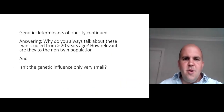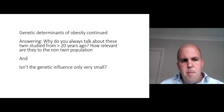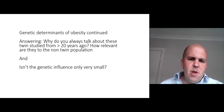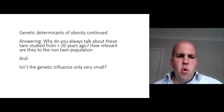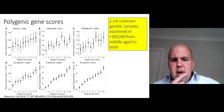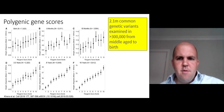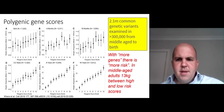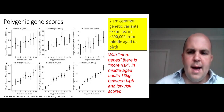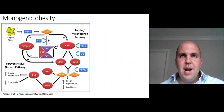People ask why reference twin studies from 20 years ago, and also whether the genetic influence is only quite small in absolute terms. Looking at this recent study from just last year, examining 3.1 million common genetic variants in 300,000 people, you can see that the more risk genes an individual has, the greater the difference in weight. In middle-aged adults, there was a 13 kilogram difference between those in the highest and lowest risk scores — clearly very significant.